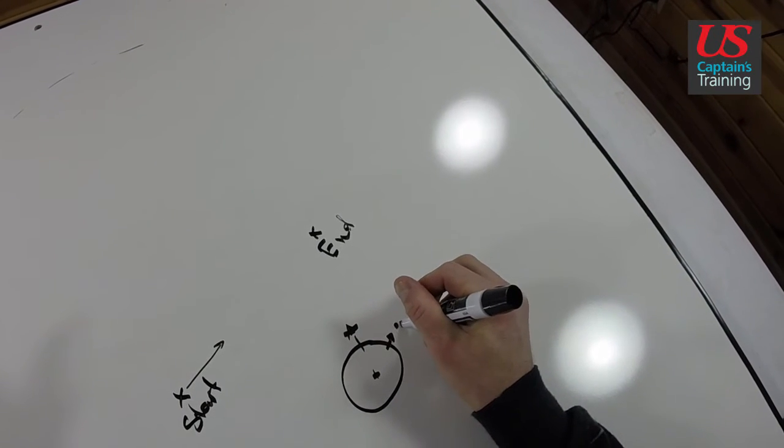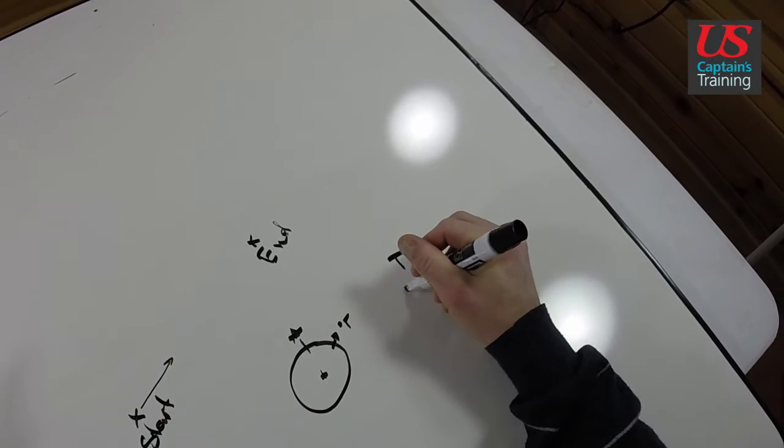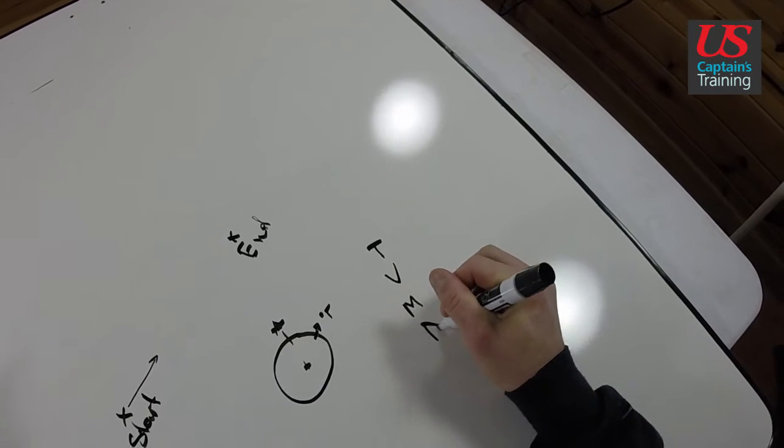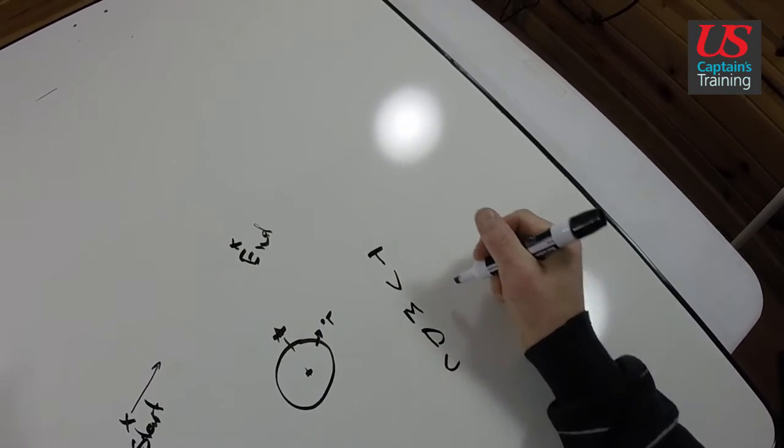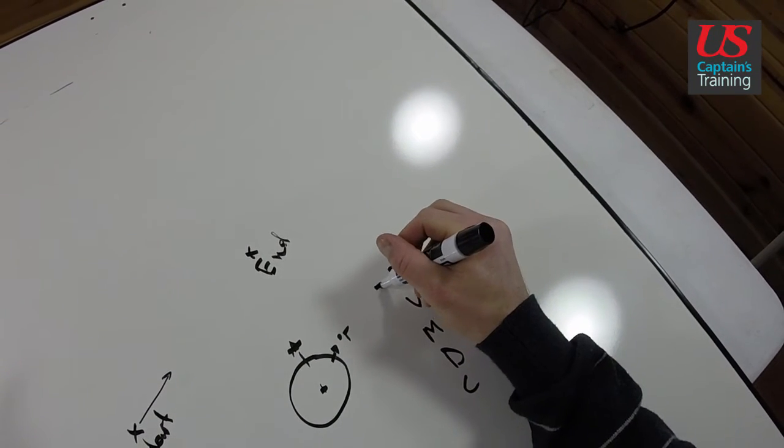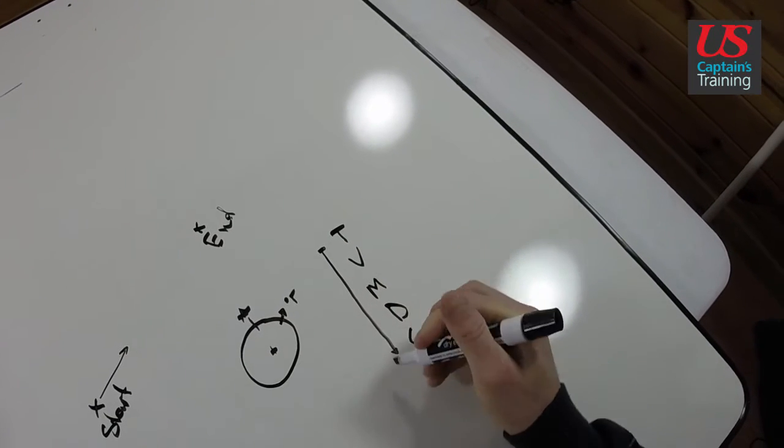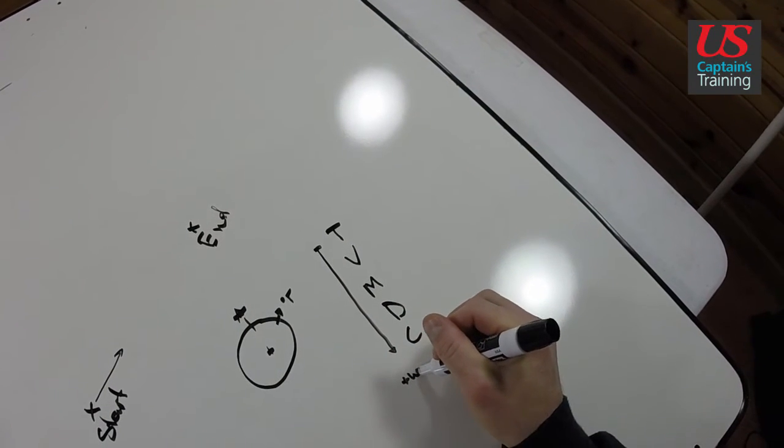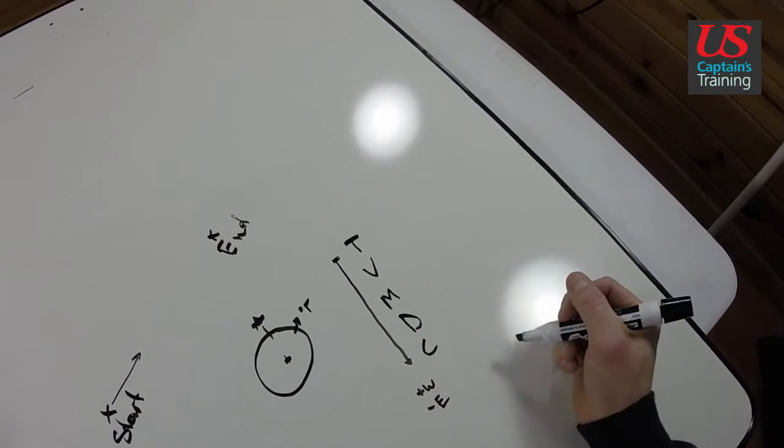And we are going to go from true down to compass, so we are going to add west and subtract east.